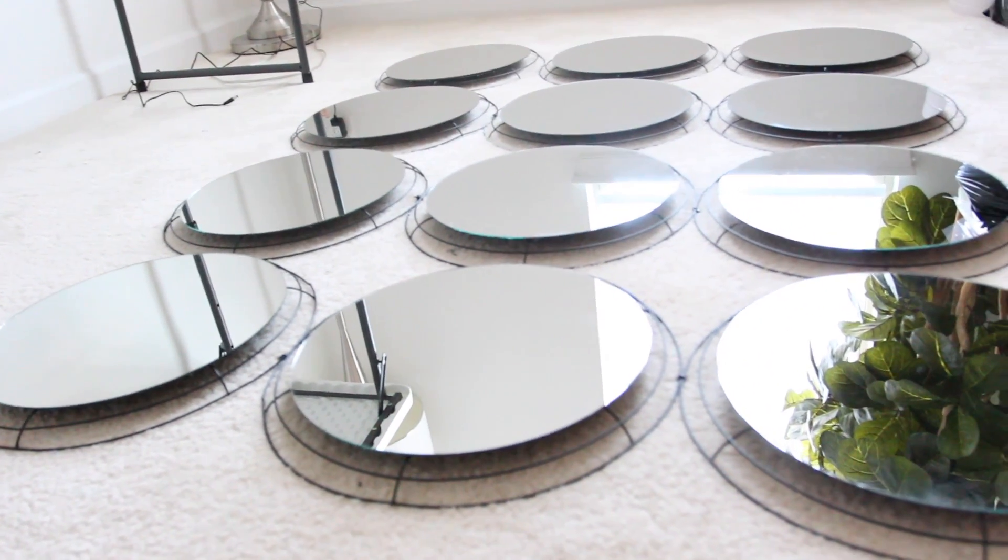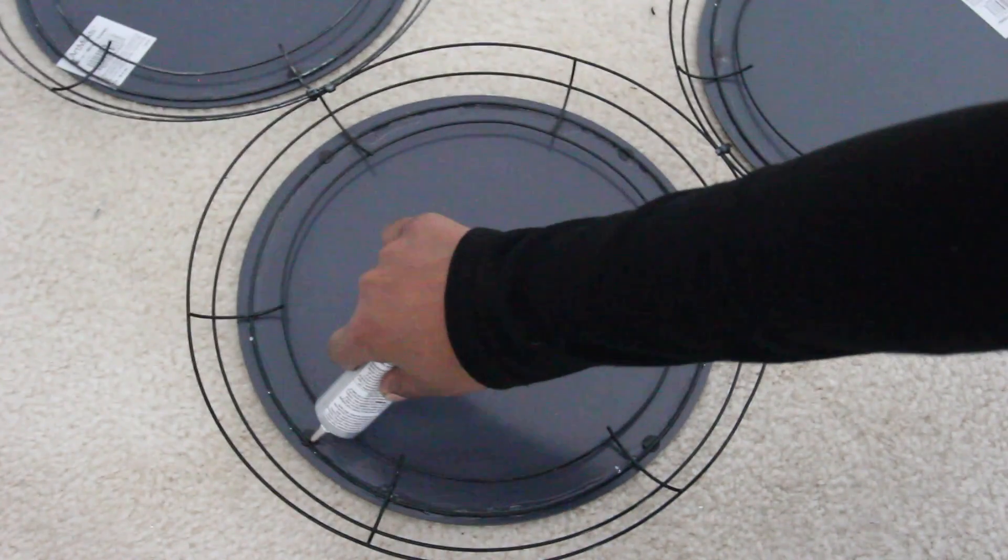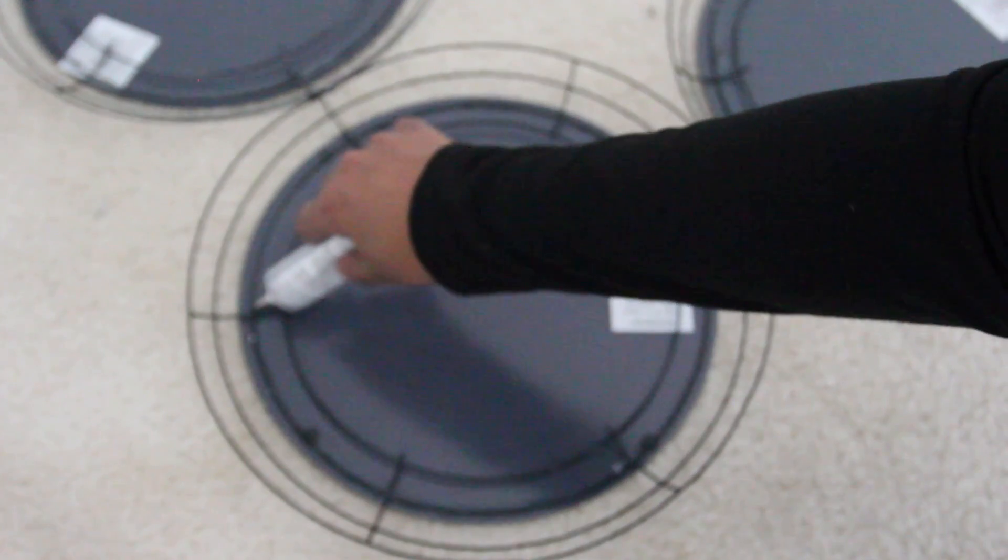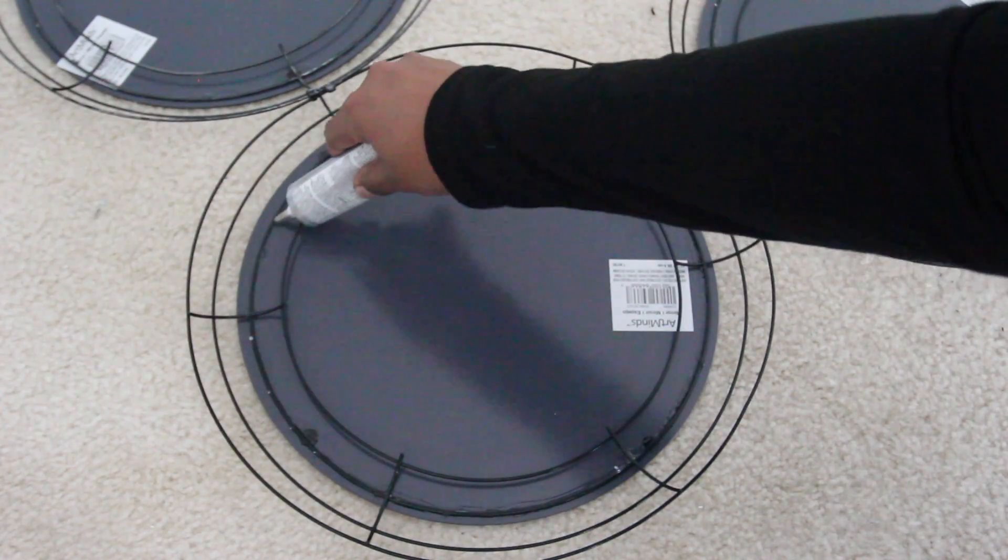I waited a few hours for the glue to dry and then I flipped the frames over and added more glue to the back of the mirrors. I really want to make sure the mirrors are secure. I let the glue dry for 24 hours.